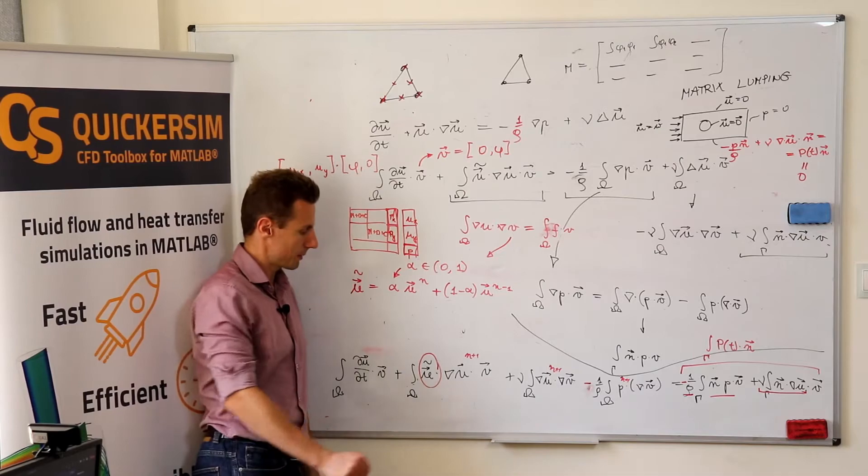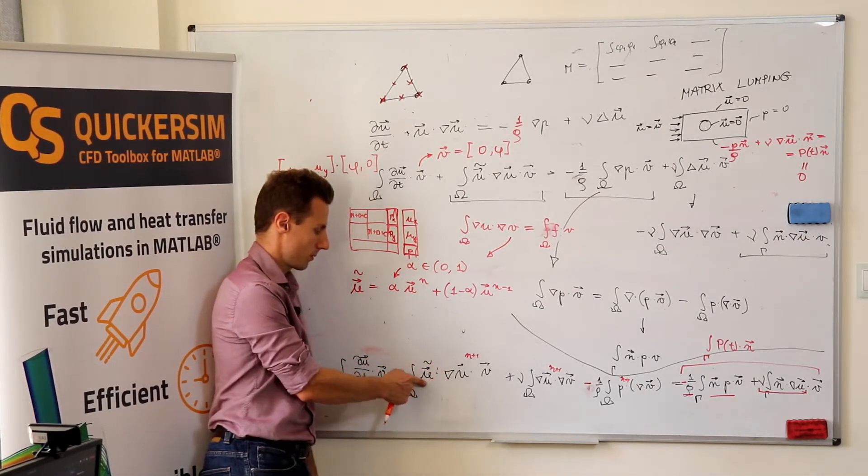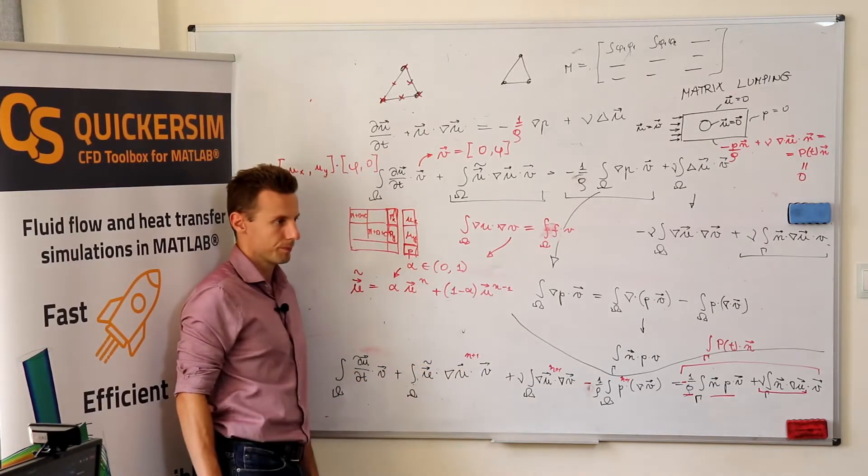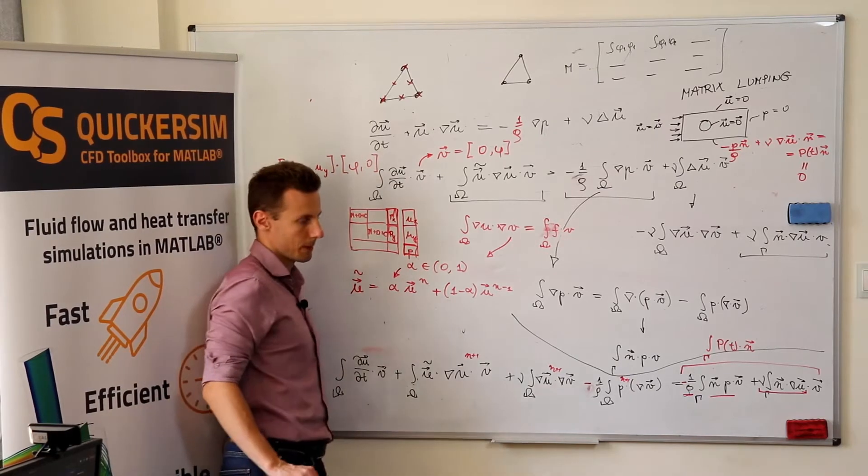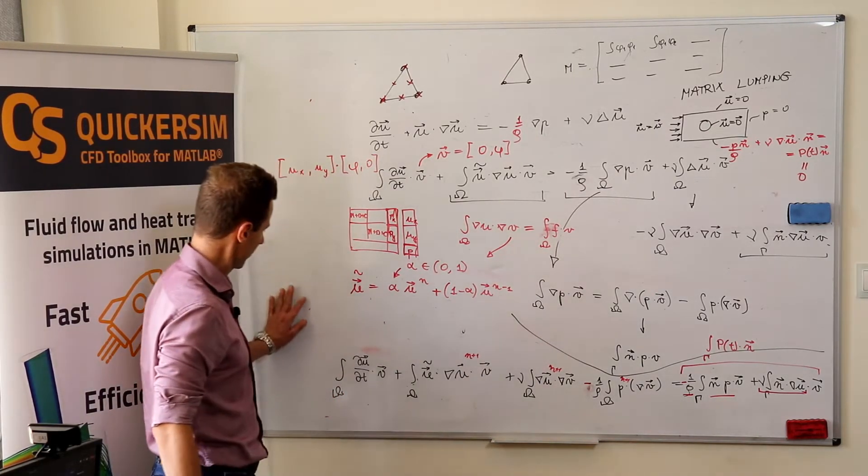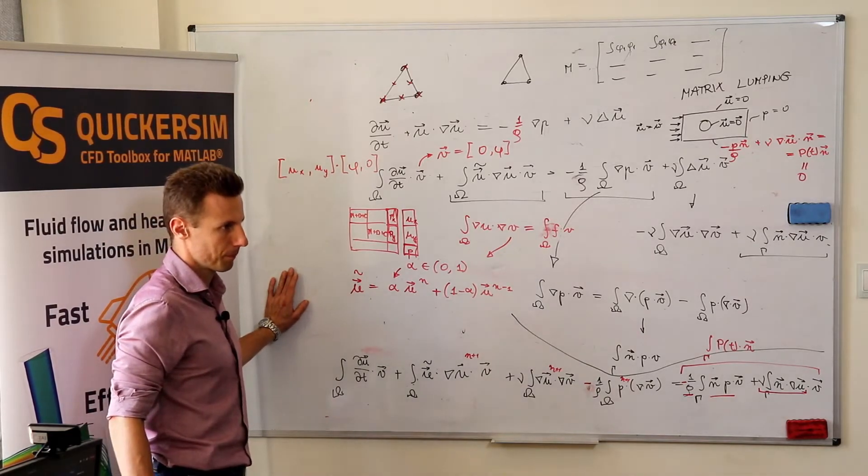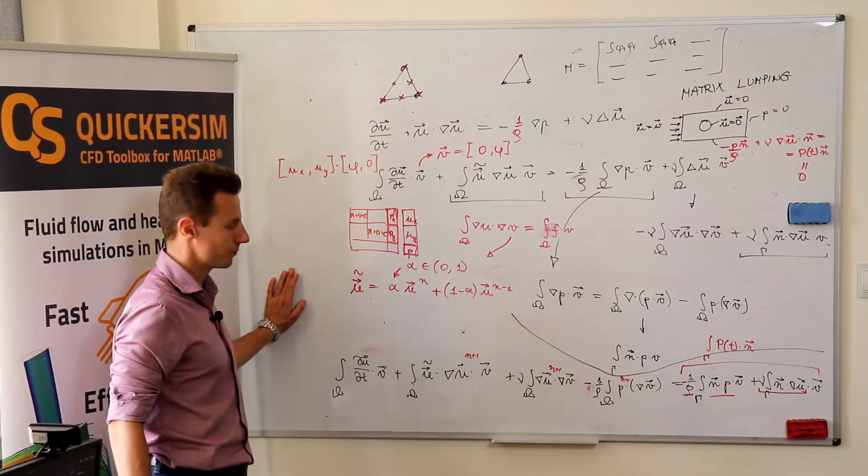What kind of schemes can you come up with? Maybe something like Crank-Nicolson? Meaning that?